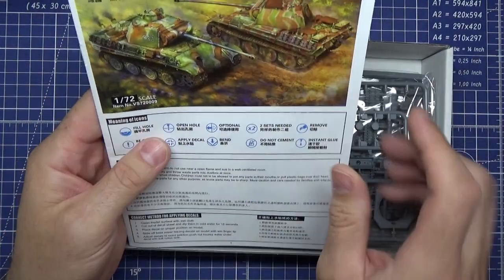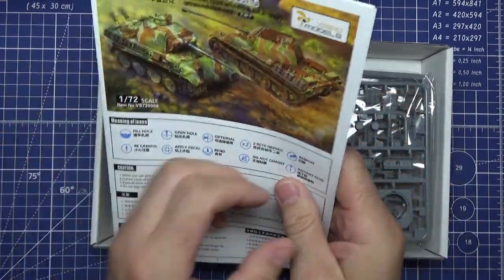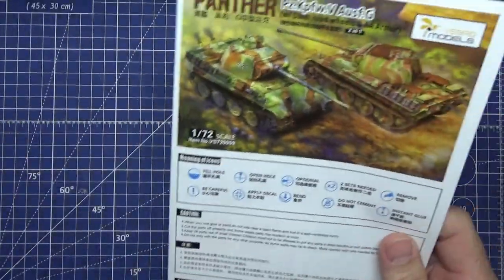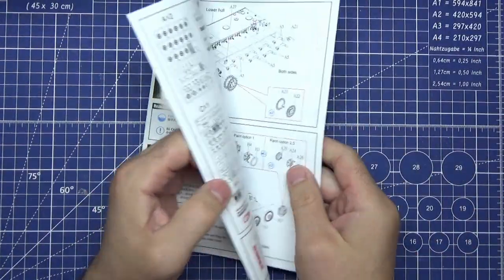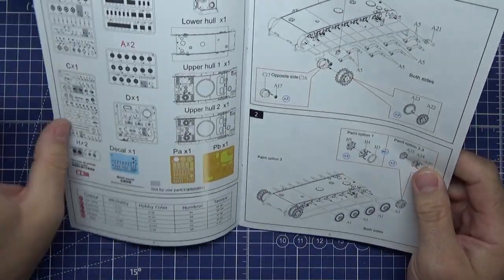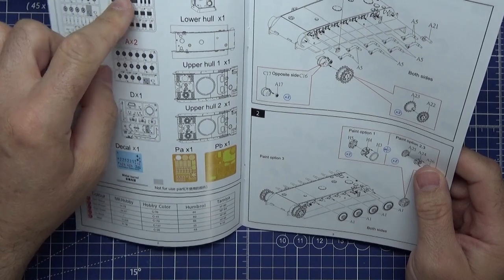First off, there's a nice colored picture on the front. We'll do the construction sheet first, showing you all the sprues and decal sheet.